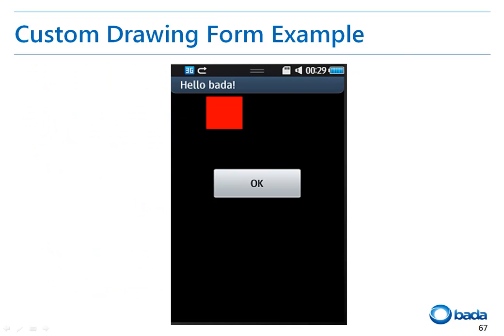If this source code is executed, the following object will be drawn. As you can see in the example, the rectangle has been drawn with the desired position, size, and color.